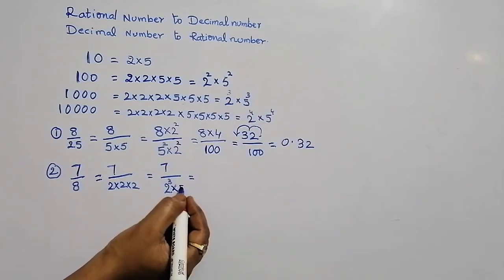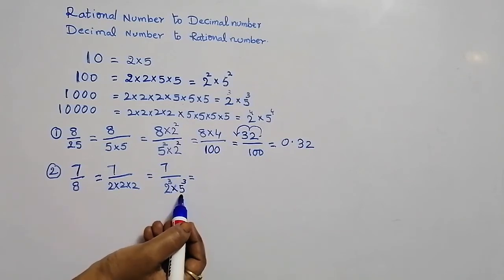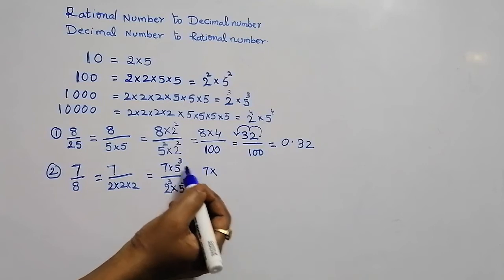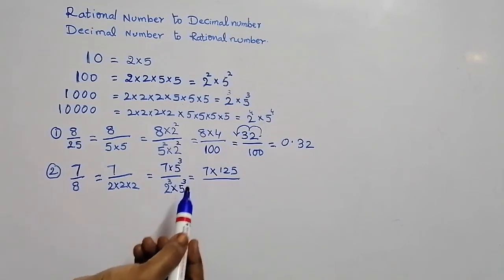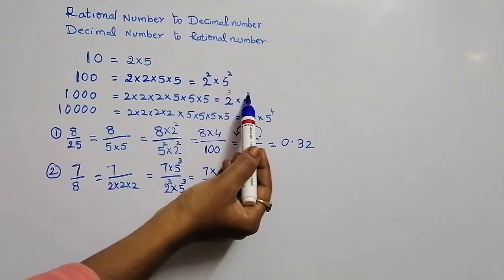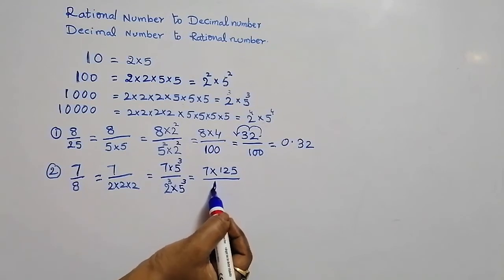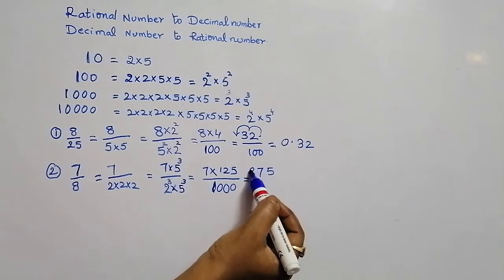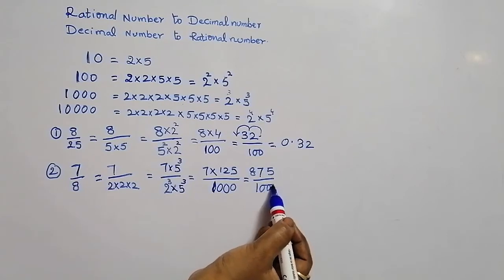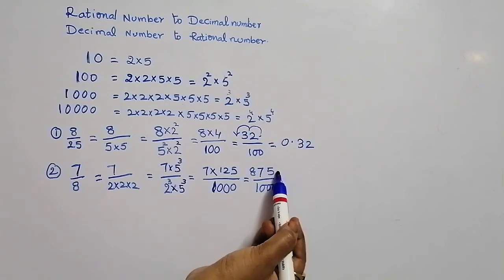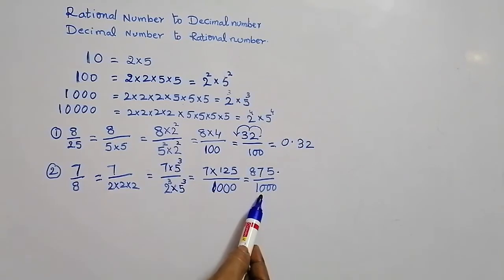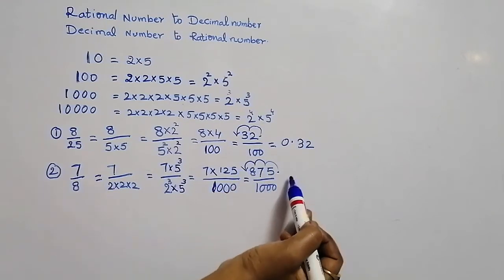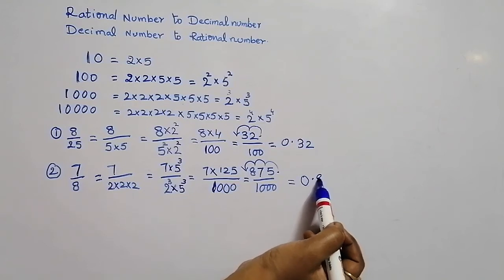Multiply 5 cube in the denominator. The same thing we do in the numerator: 7 into 5 cube is 125. And 2 power 3 into 5 power 3 is 1000. So the numerator is 875 and the denominator is 1000. The decimal point for 875 moves 3 places to the left, giving the answer 0.875.